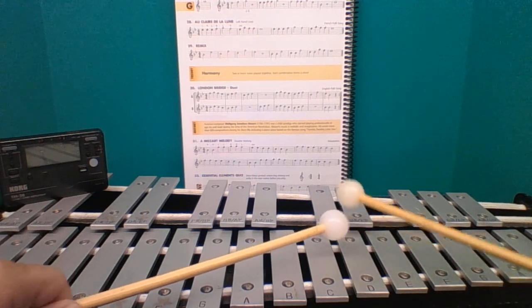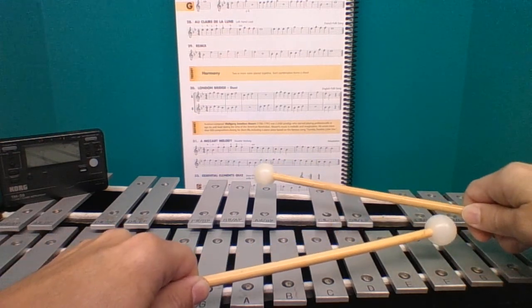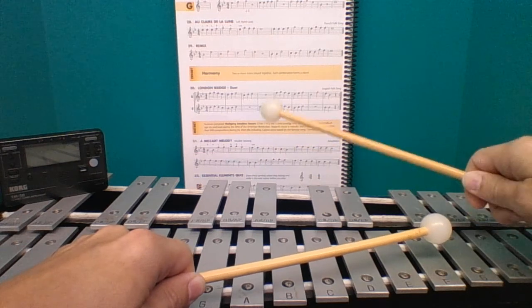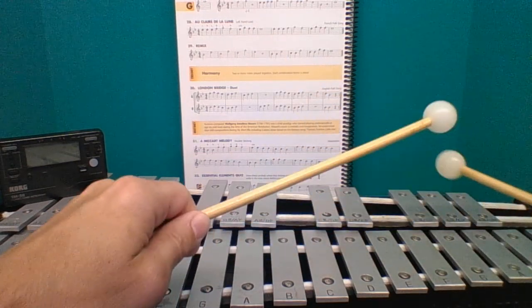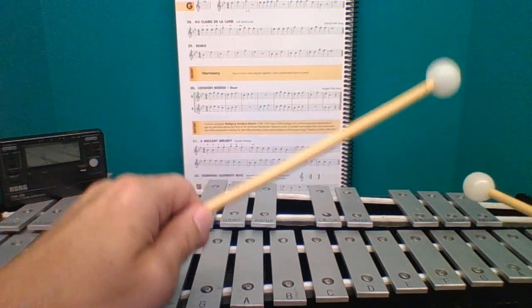And it's at this point that we need to again cross the mallets to be ready for our B flat and F transition: B flat B flat F F G G F.